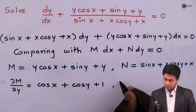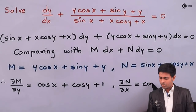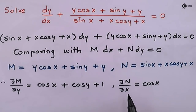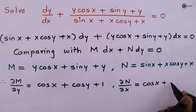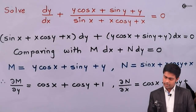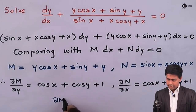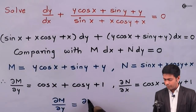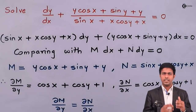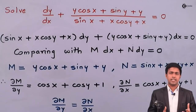Next, we find ∂N/∂x: differentiating sin x gives cos x, and cos y is constant since we're differentiating with respect to x, so plus cos y, and derivative of x is 1. Both values are exactly the same, so ∂M/∂y = ∂N/∂x, and the given differential equation is exact.